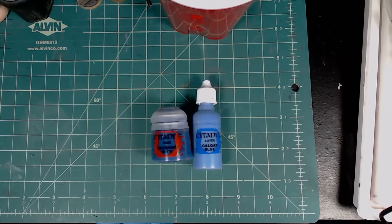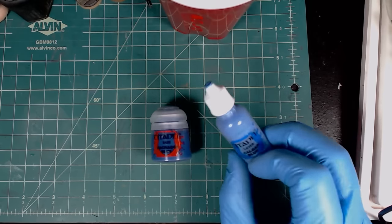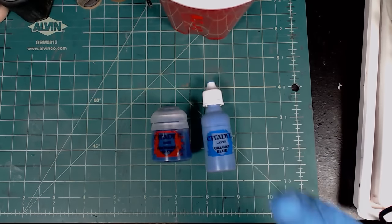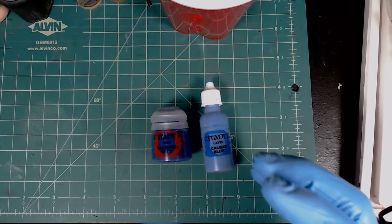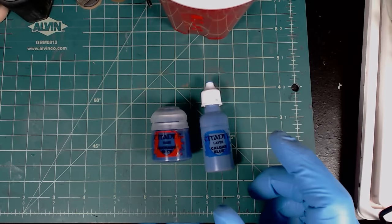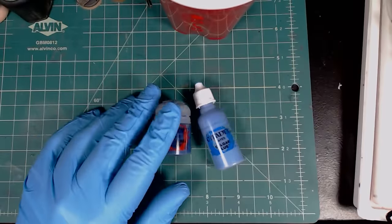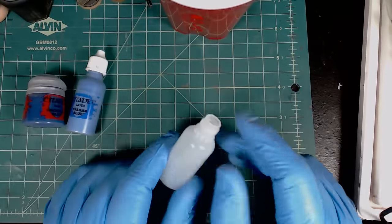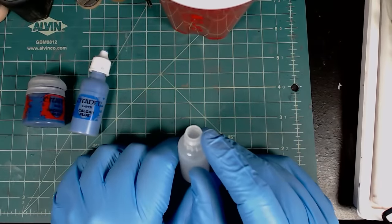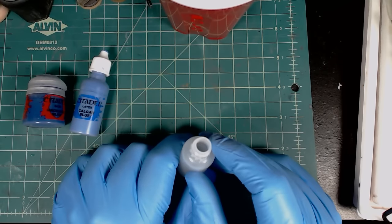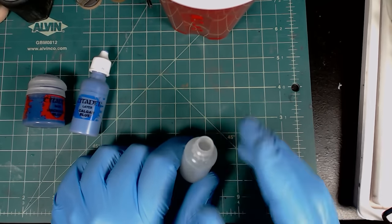But the means of transferring paint into one of these dropper bottles, for the most part what I've seen in the community, is people use little funnels that they've made themselves or maybe they buy a funnel. The neck, the opening, is not huge, so a funnel is generally the way to go.